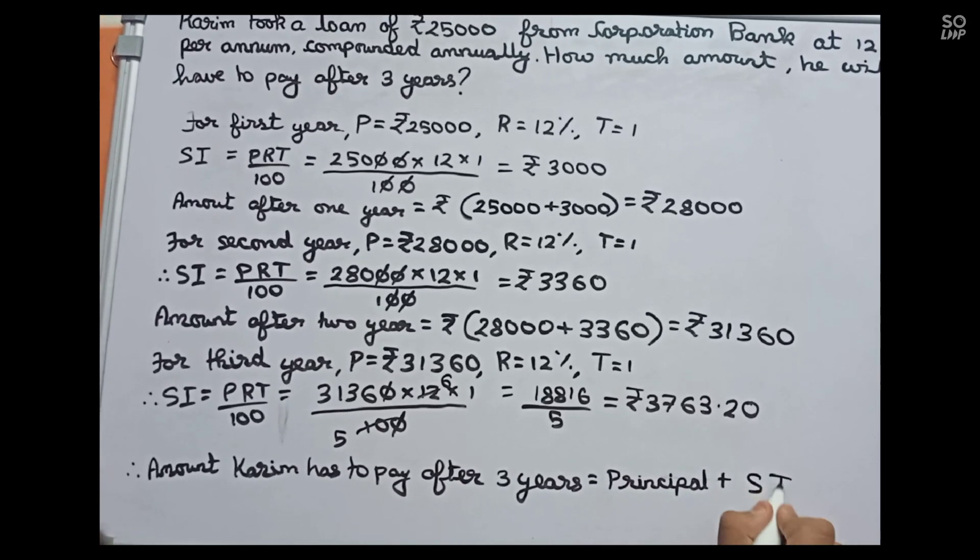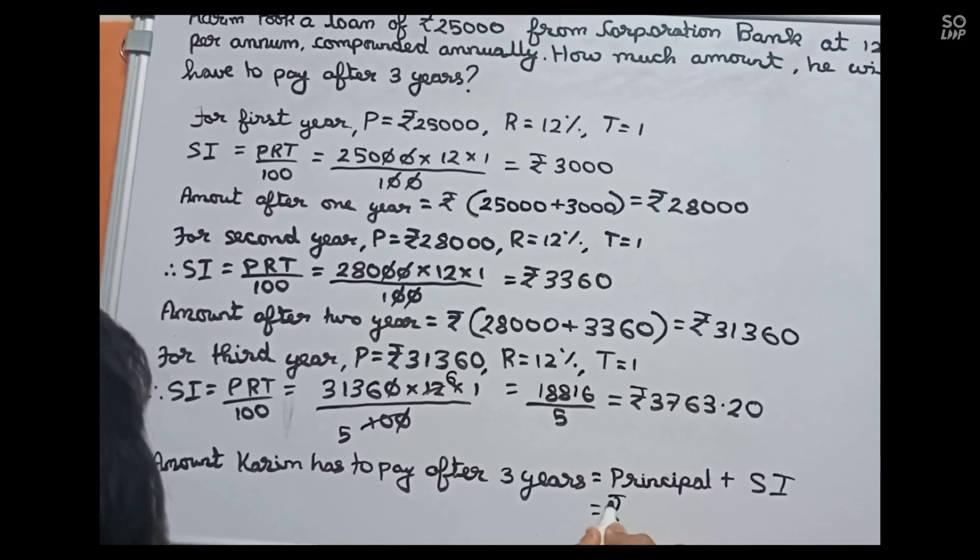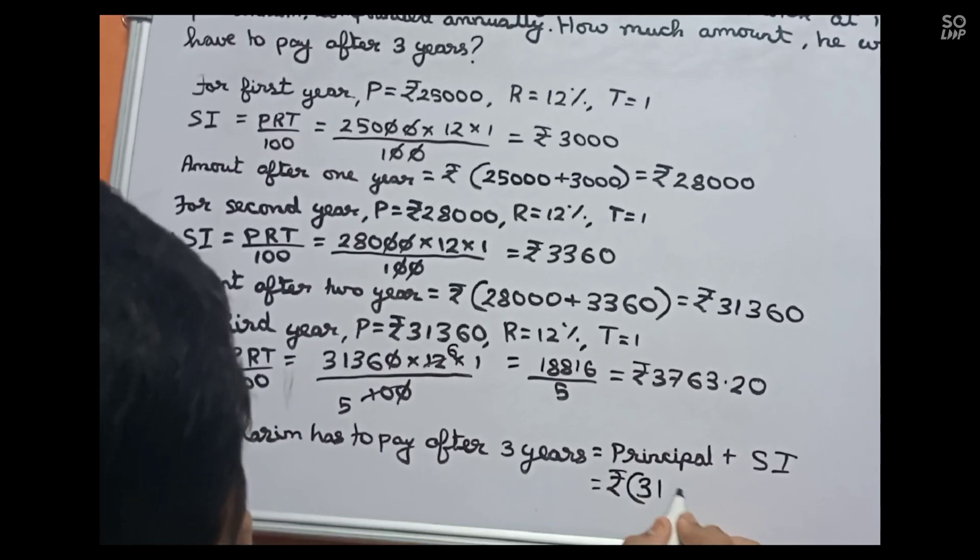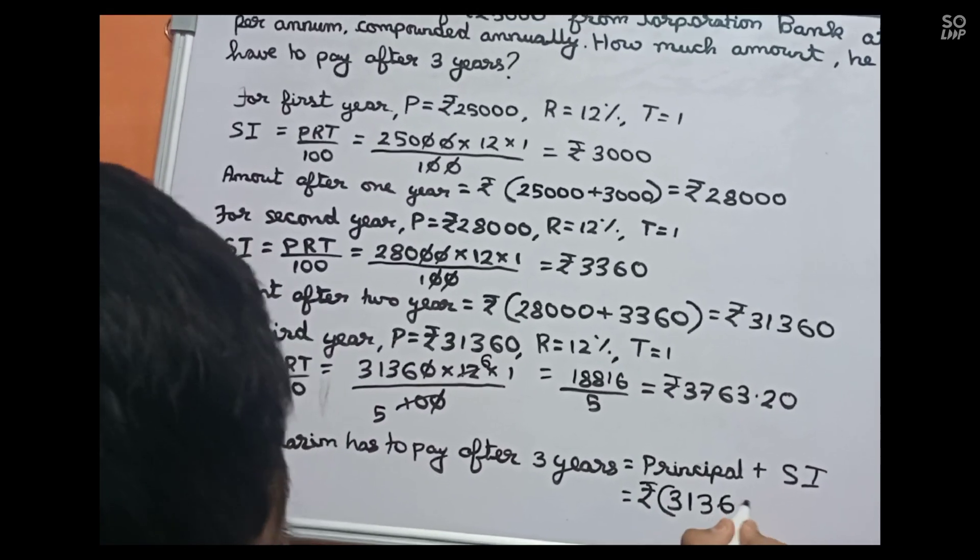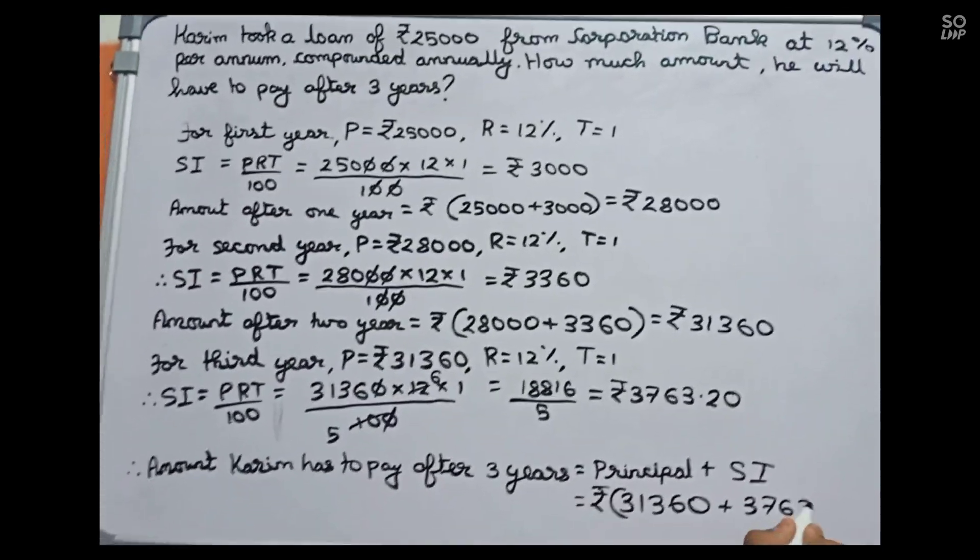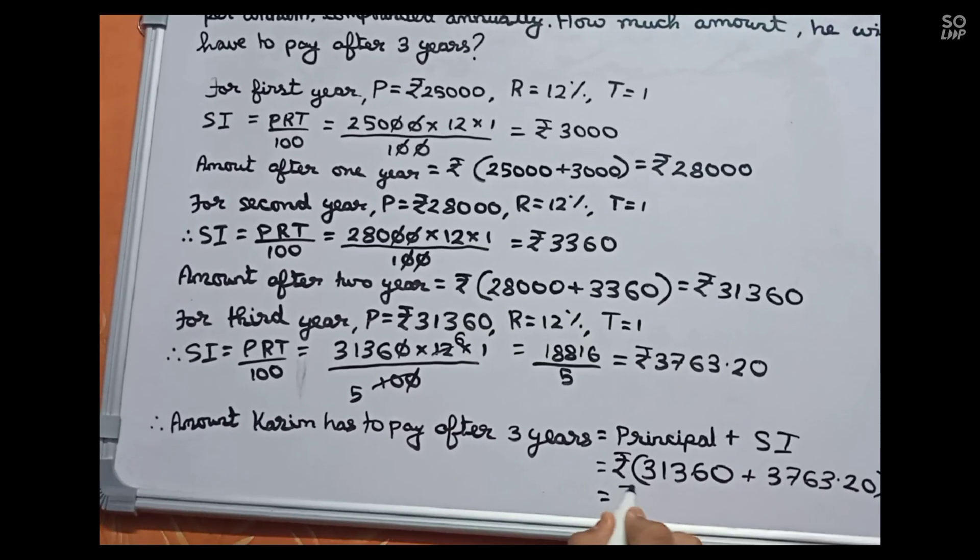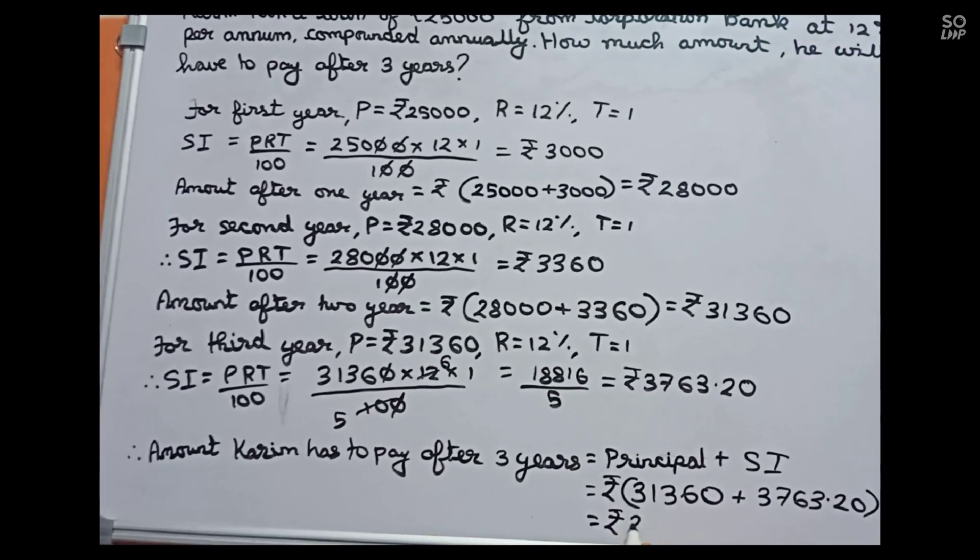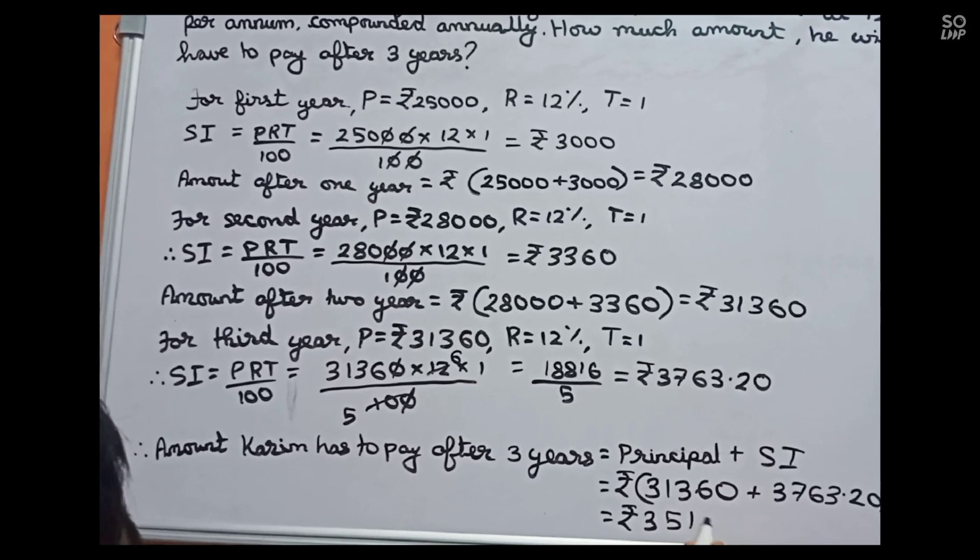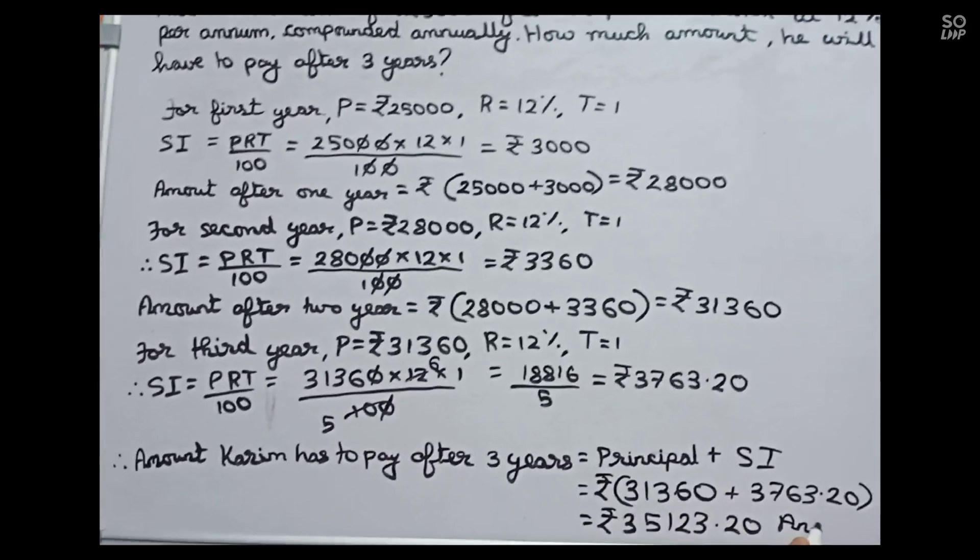Amount equals to principal plus SI, so it will become rupees 31,360 plus 3,763.20, which equals 35,123.20. So this is our final answer.